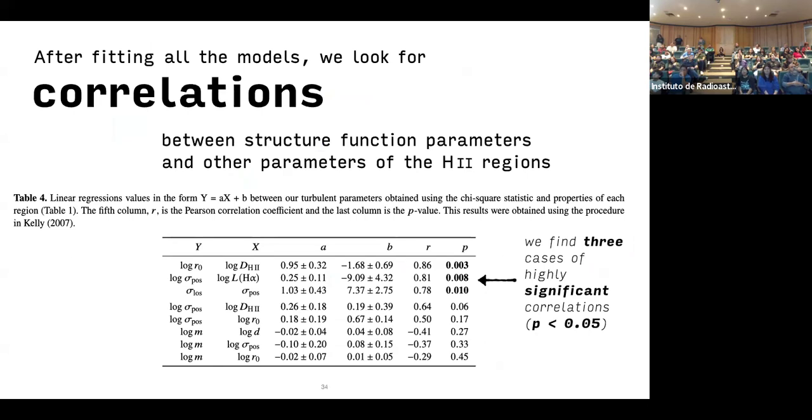Once we've done all that, we look for correlations between the structure function parameters themselves, and between the structure function parameters and other properties of the H2 region, like its luminosity, its diameter. We find three cases of significant correlations.